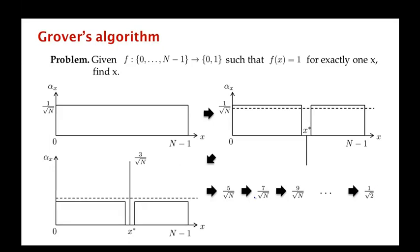How many iterations does it take? We seem to be increasing the amplitude by roughly 2/√N each time, so it takes about √N (perhaps √N/2 or √N/4) iterations to reach a constant amplitude. Of course, this analysis was imprecise because all other amplitudes keep decreasing from 1/√N with each inversion about the mean, which means the amplitude of x* doesn't quite go up by 2/√N each step — it increases by smaller and smaller amounts.